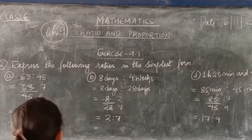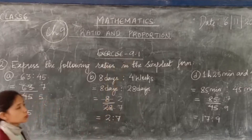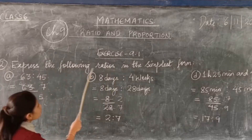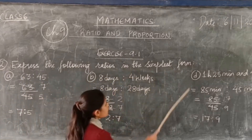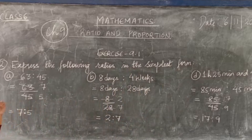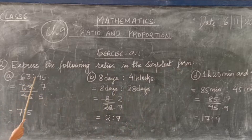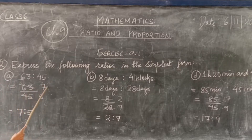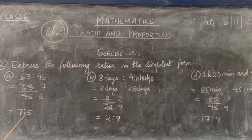Now we will start Exercise 9.1. Question number 1, you do yourself. Question number 2: express the following ratios in the simplest form. First is 63 is to 45. Write them in fractional form: 63 over 45. Cancel — 9 sevens are 63, 9 fives are 45 — so the answer is 7 is to 5.